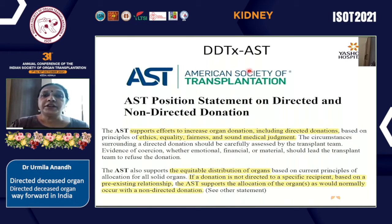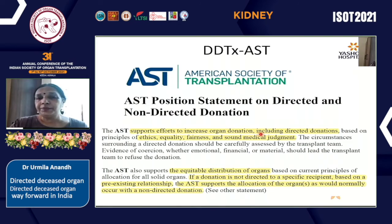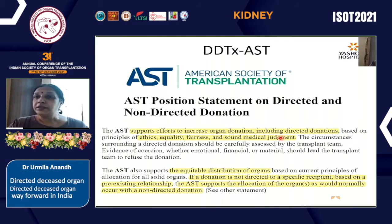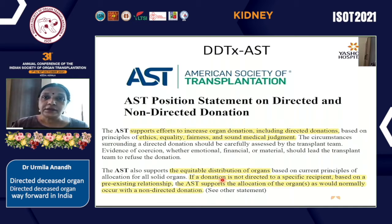UNOS and OPTN have legally authorized directed deceased donation, and they believe it can be done as long as agencies involved take steps to verify the medical suitability of the organ offered to the specified recipient. There have been at least 100 deceased donor directed transplants each year. The American Society of Transplantation Position Statement supports efforts to increase organ donation, including directed donations, if based on ethics of equality, fairness, and sound medical judgment. If the directed donation cannot proceed, the organ should be channeled into the waitlisted program.